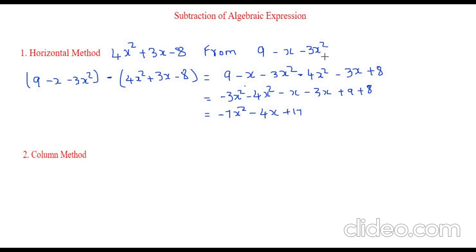Since after 'from' we have this equation 9 minus x minus 3x square, I will write that equation first. Let's go with the highest power which is minus 3x square minus x plus 9. And now the second equation we will put the same like terms below each other, which is 4x square plus 3x minus 8.